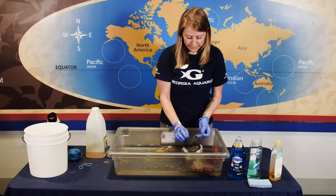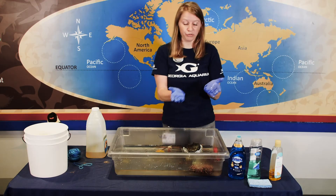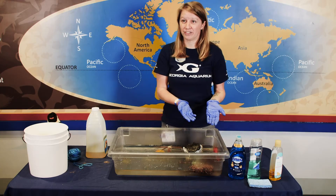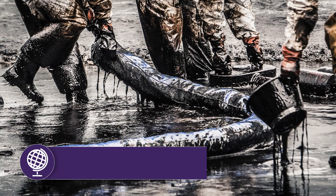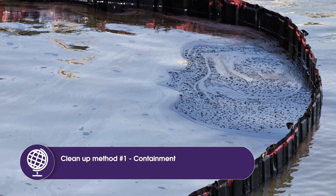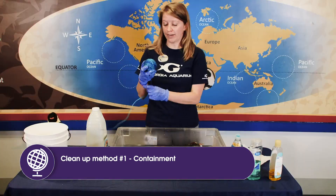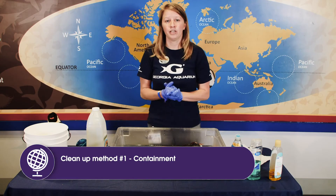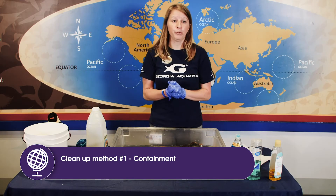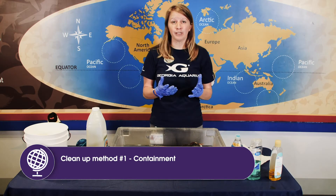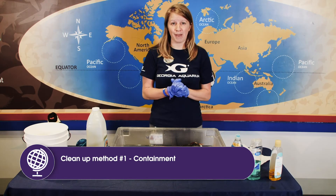The next part of our activity is we're actually going to move to the cleaning and cleanup side. In the real world, there are three different types of methods used to clean up oil. The first one is containment — we're going to try to block the oil from hitting the coastline using this string. They use floating barriers called booms that actually absorb oil. This doesn't always work perfectly, but it is a method they try.